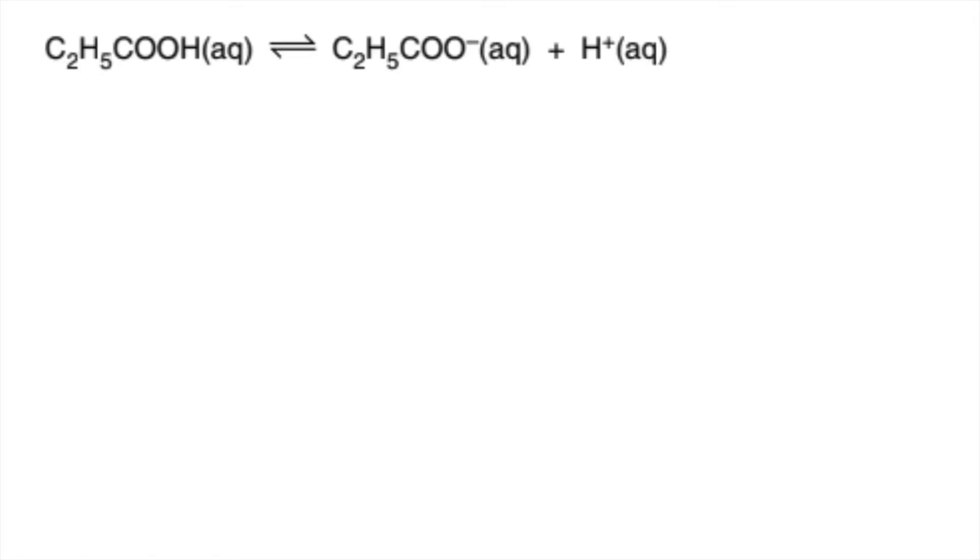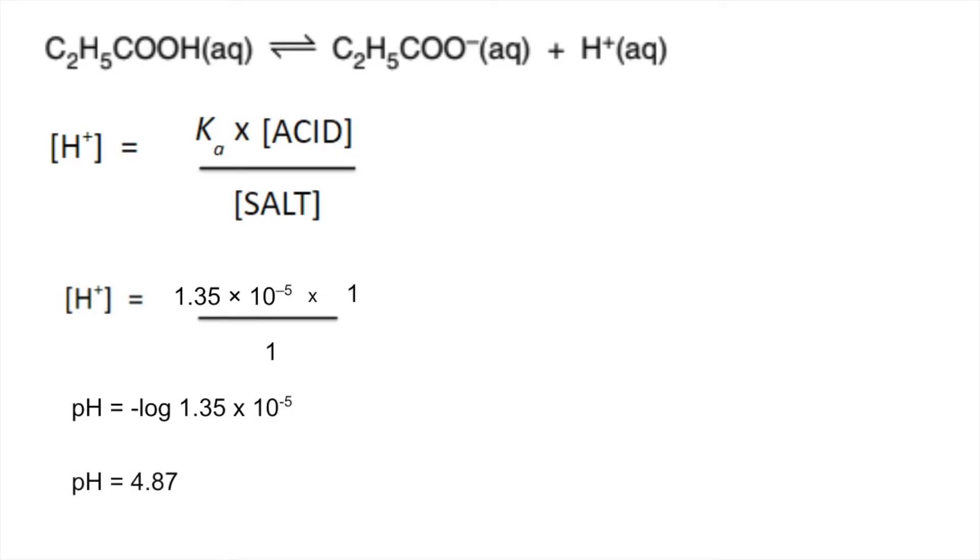The first thing I've done is brought in the equation that represents the buffer, and now we'll bring the cacid over salt expression in. H+ concentration of this buffer is Ka multiplied by the acid concentration divided by the salt concentration. That cancels down to H+ equals 1.35 × 10⁻⁵. Minus log that to get the pH 4.87 to 2 decimal places.